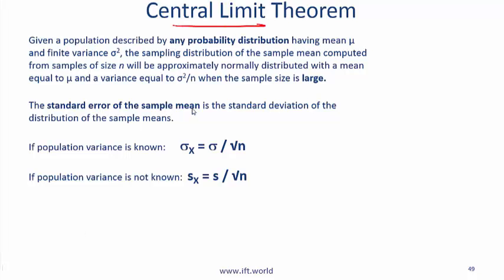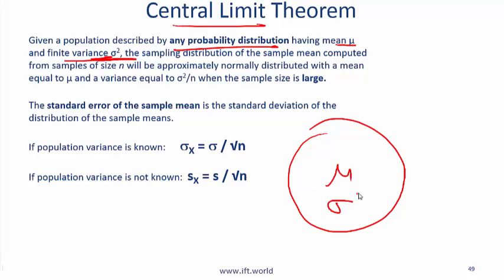Some of you asked me about the central limit theorem and this is very testable. I read this and give you a brief explanation but then it is critical for you to practice lots of problems. Given a population described by any probability distribution having a mean mu and finite variance, the sampling distribution of the sample mean, so what does this mean? So you have a population and let's say this population has a mean mu and some variance and then you draw samples from this. The sampling distribution of the mean, so every time you draw a sample the mean will be different. But can we say something about the distribution of the means, the sample means?